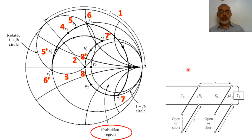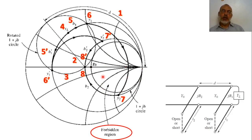This is the main strategy for designing a double stub tuning set. For the special case — which is the usual case in practice — the distance D is chosen to be around lambda over 8. In this case the line is normal to the real axis, so the rotated 1 plus jB circle will be normal to the original 1 plus jB circle. This will be seen in the example in the next video.